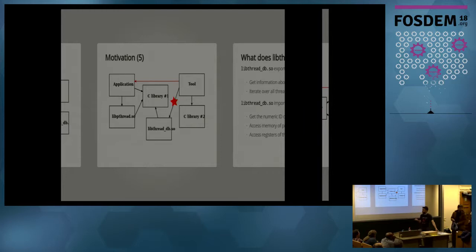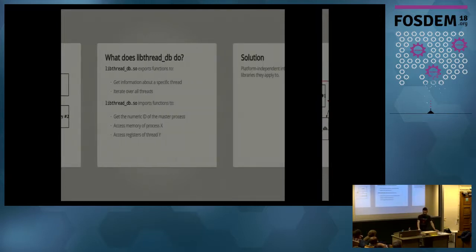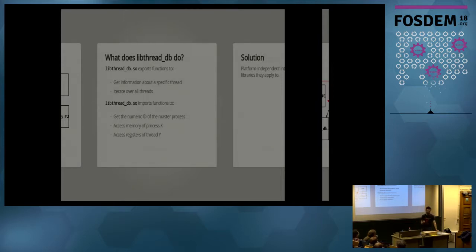Obviously you can make special builds of debug libraries that are built for one thread library but linked against another, but then you have a matrix of different builds to maintain and it gets out of hand. So in order to replace LibThreadDB with something else, I looked at what LibThreadDB actually does. It exports a bunch of functions to the tool. In terms of what GDB uses, they're all functions to get information about a specific thread, and there's a function to iterate over all threads.